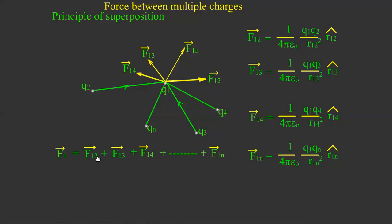Now substitute for F12, F13, F14, and F1n. F1 is equal to, for F12: 1 over 4 pi epsilon 0 times Q1 Q2 divided by R12 whole squared times R12 cap. This is the unit vector. For F13, this much. And for F14, this much. And F1n, this much.